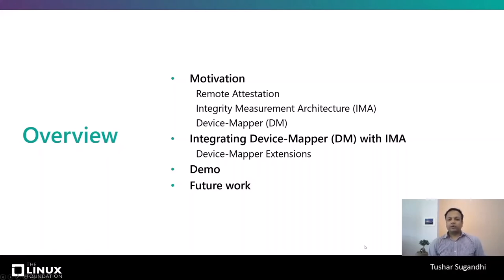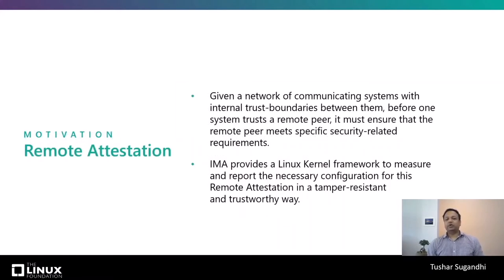Today we are going to talk about remote attestation in general and how various Device Mapper modules and extensions measure their data using IMA's runtime measurement capabilities, and how we can use that measurement data for remote attestation. Remote attestation is all about establishing trust between two systems which are part of some network. Before one system entrusts a remote peer, it must ensure that the remote peer meets certain security requirements. IMA provides the necessary framework from within the Linux kernel to measure and report the necessary configuration of that remote peer for attestation in a tamper-resistant and trustworthy way.